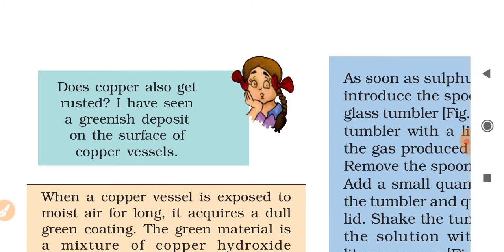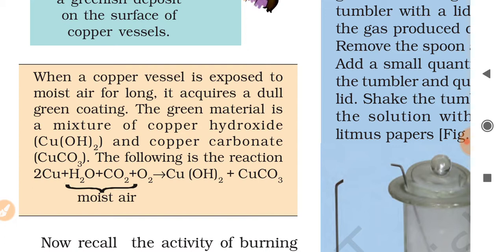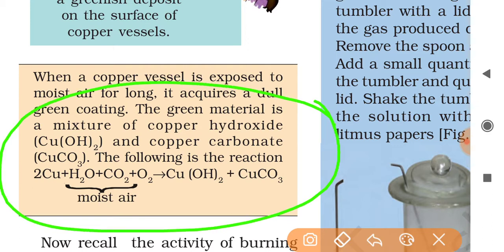When a copper vessel is exposed to moist air for long, it acquires a dull green coating. The green material is a mixture of copper hydroxide and copper carbonate. The following is the reaction - this is the example of moist air: H2O plus CO2 plus O2 forms a coating of copper hydroxide.